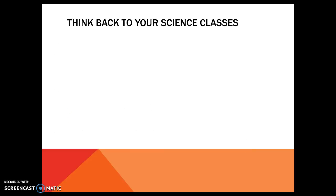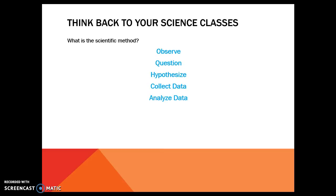Think back to your science class. What is the scientific method? We start with an observation, then move to a question, come up with a hypothesis about what we think is going to happen, collect data, analyze it, and come up with a conclusion — which leads to a decision and probably a new question. This is the same process we go through in hypothesis testing. It's a merge between math and science, and we call it statistics.